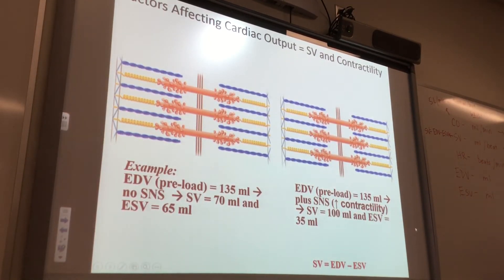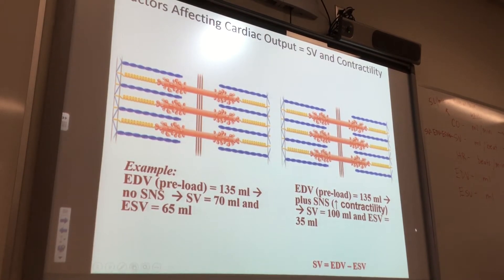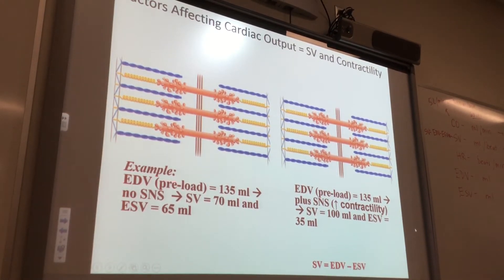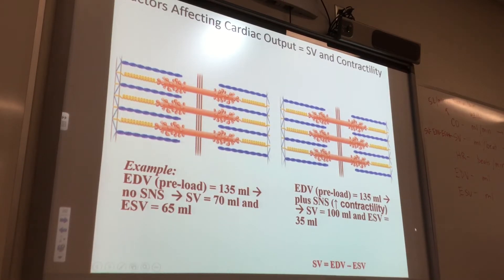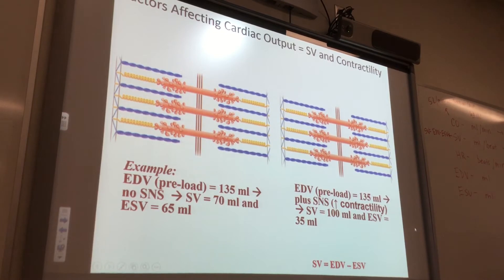So here's what I was thinking. Let's say you have two hearts and they're exactly the same genetic makeup, and each of the hearts was given an end-diastolic volume, or a preload, of 135 mils. That means the sarcomeres in the ventricles look like this. The orange is the myosin, the blue is actin, and these little springy things — starts with a T — titin.